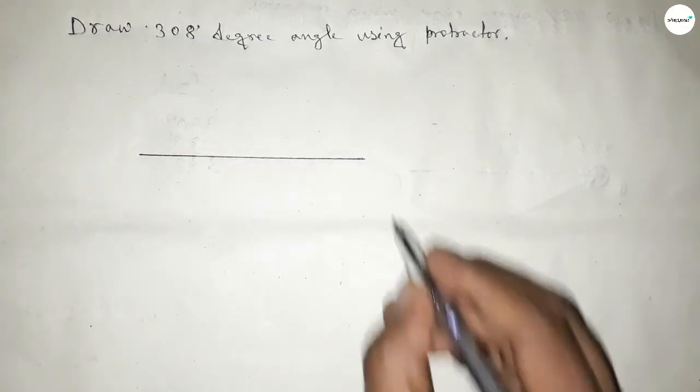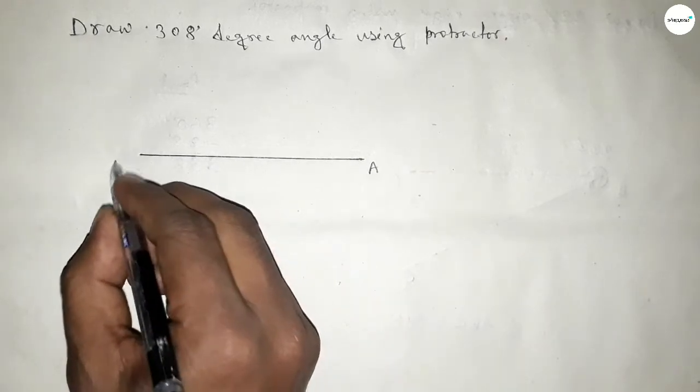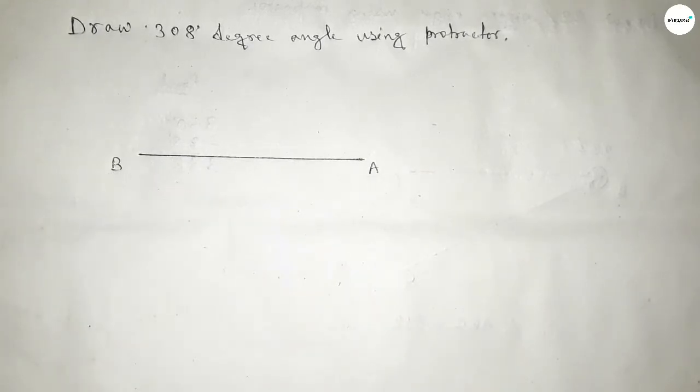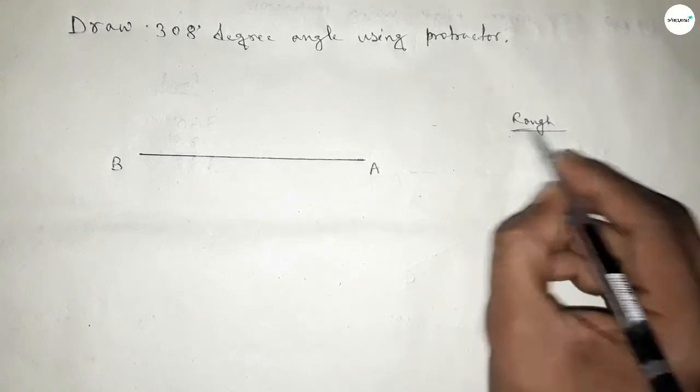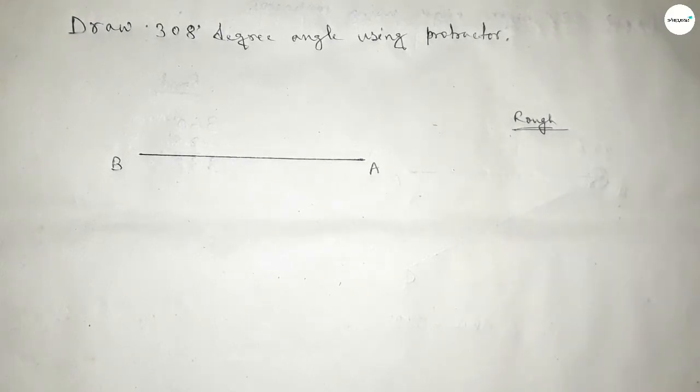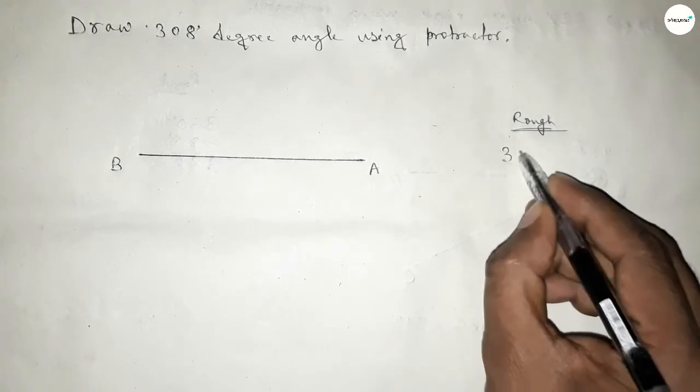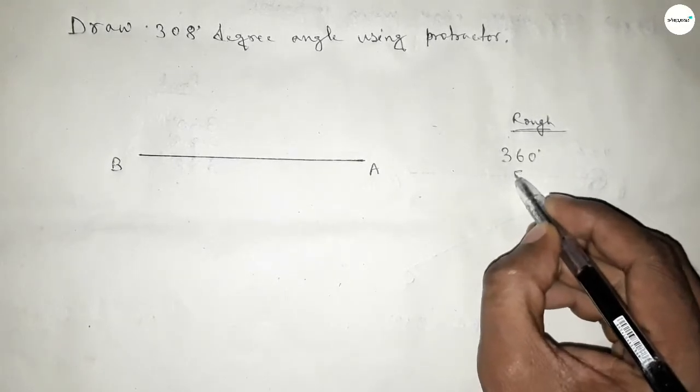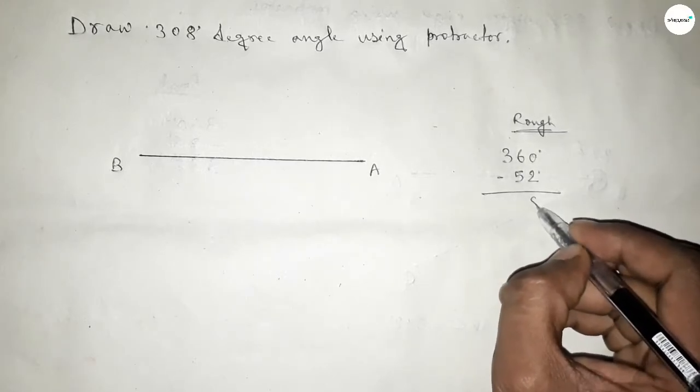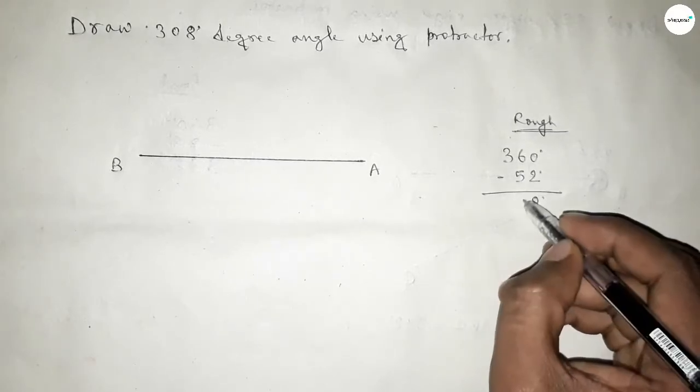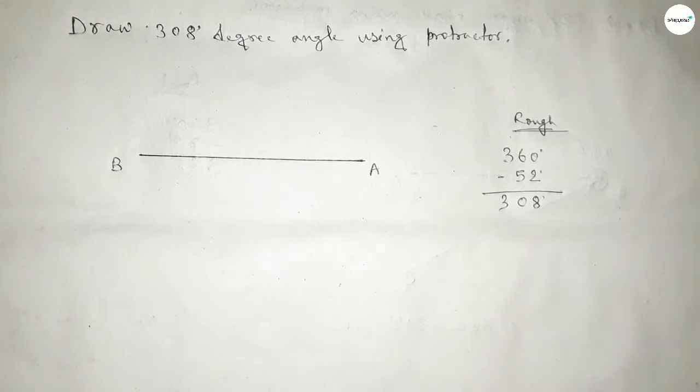Taking this end as point A and this end as point B. Now, roughly discussing some important calculation here. If we subtract 52 degree angle from 360 degrees, then we can get 308 degree angle. So subtracting this: 360 minus 52 equals 308 degrees.